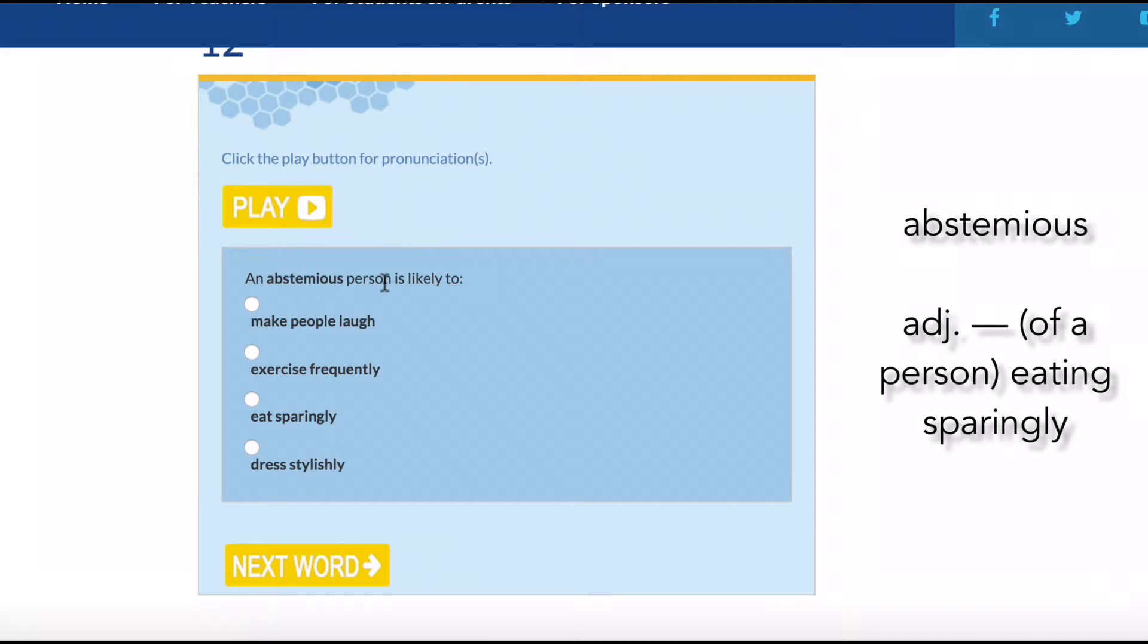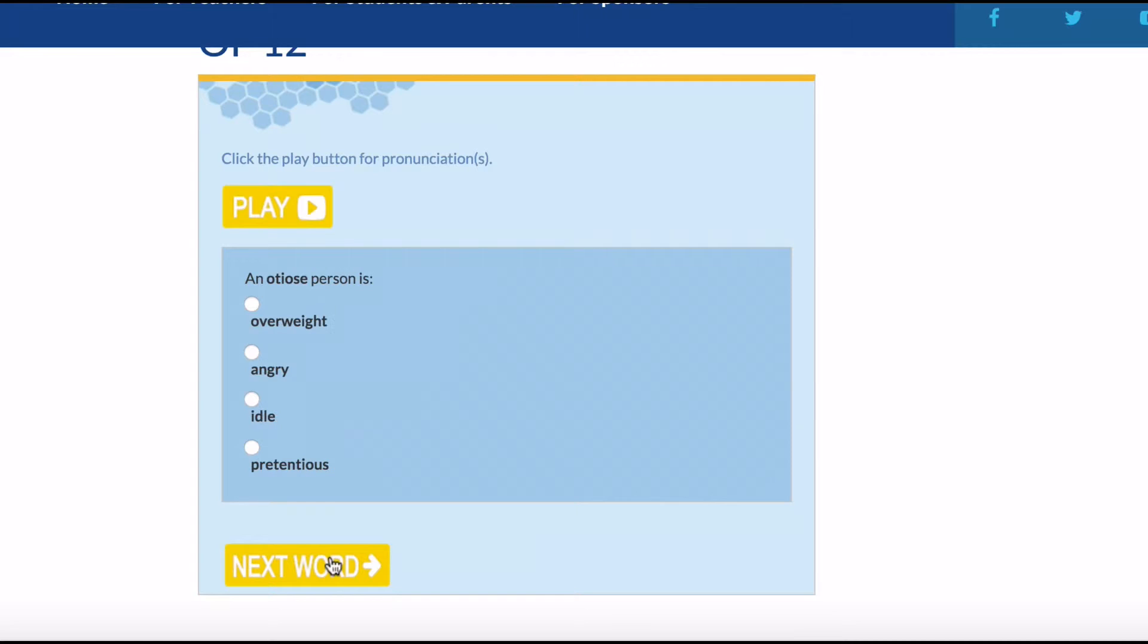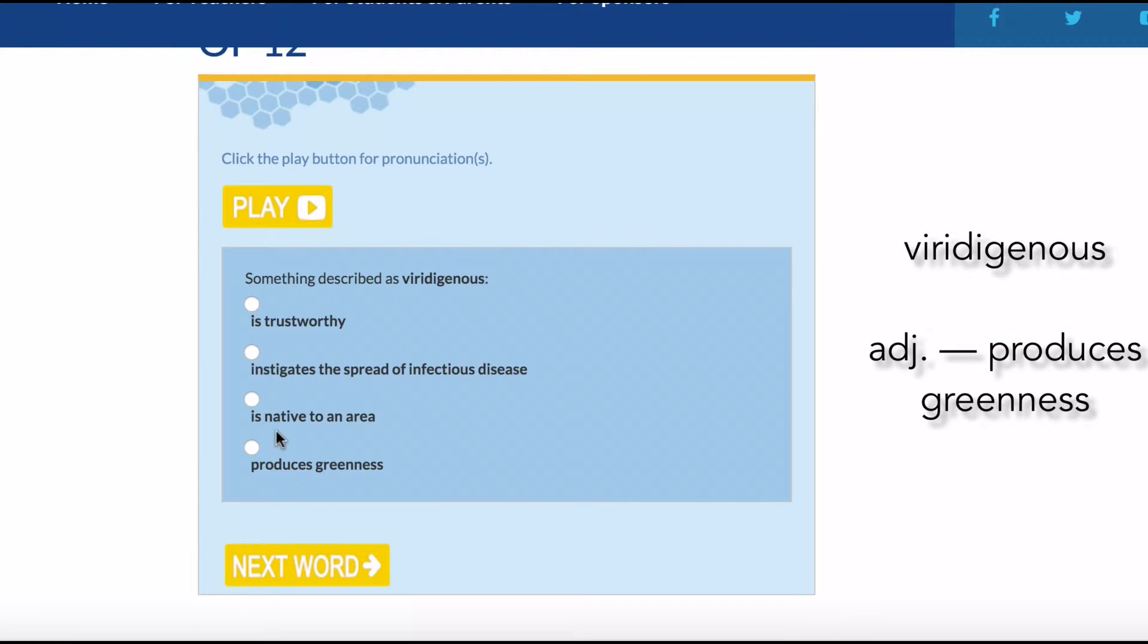An abstentious person is likely to eat sparingly. An oidiois person is idle. Something described as viridiginous is it produces greenness.